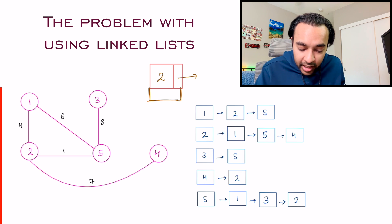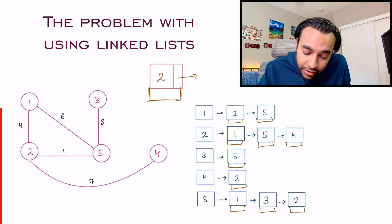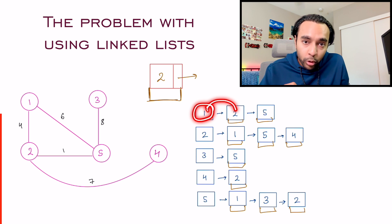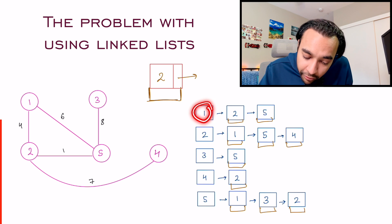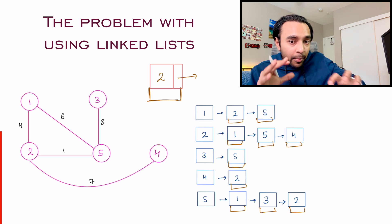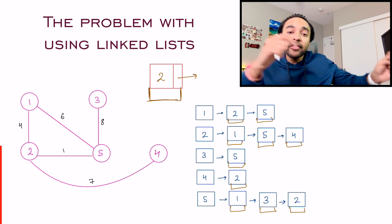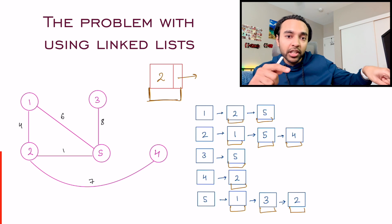But then how do you determine what is the cost when you are going from node one to node two? Or what is the cost when you are going from node one to node five? So this will become a lot more confusing.